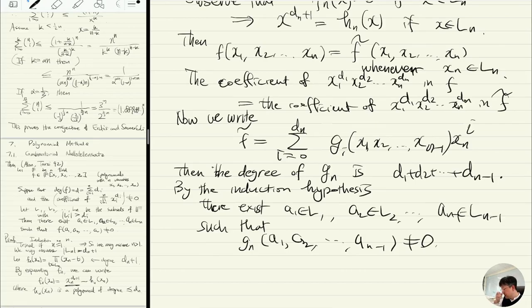Actually, not n—let me fix this. It's gdn, because this number goes all the way up to dn.